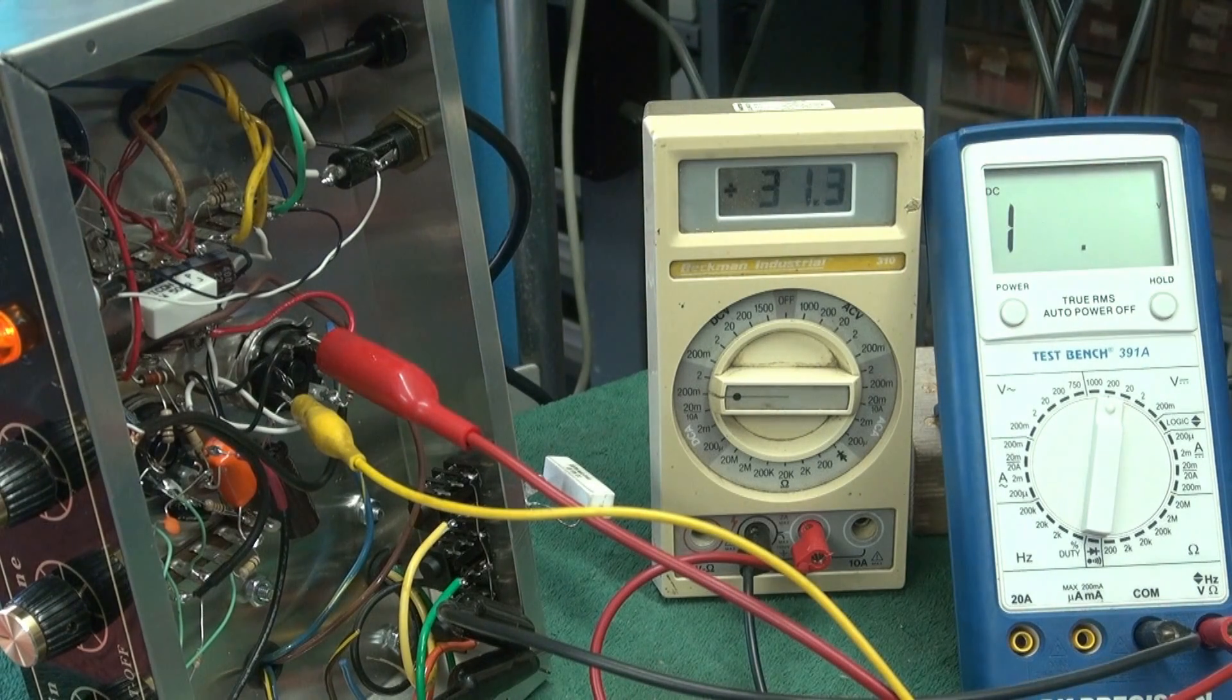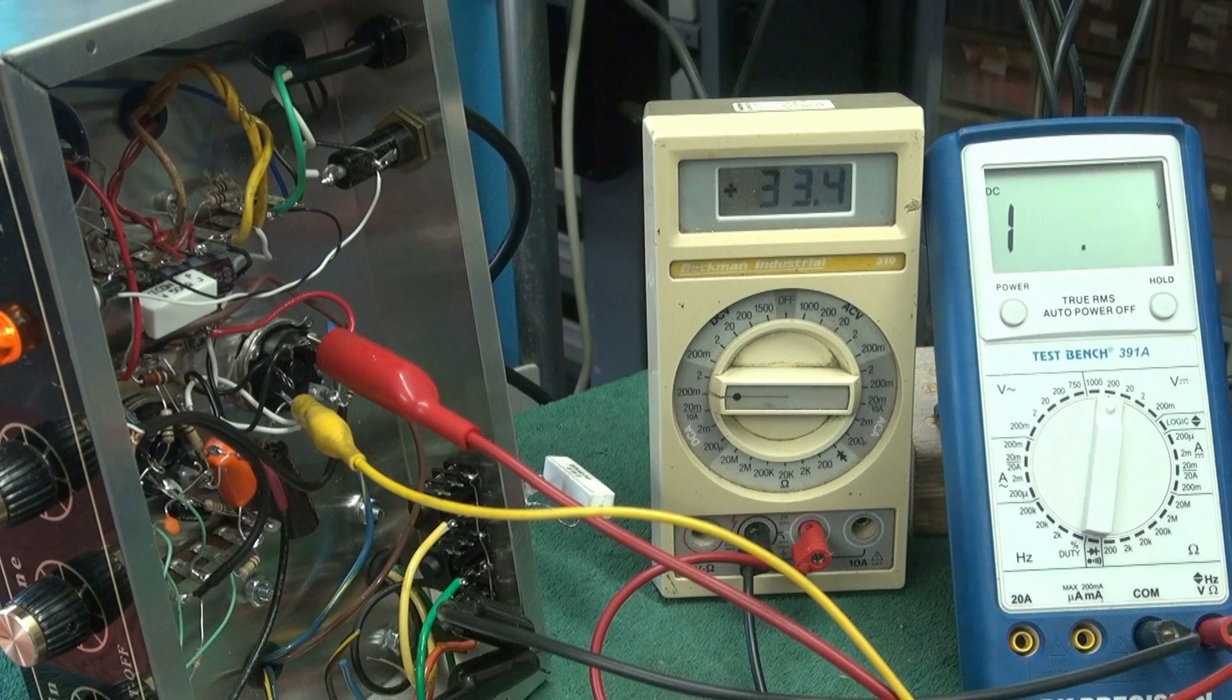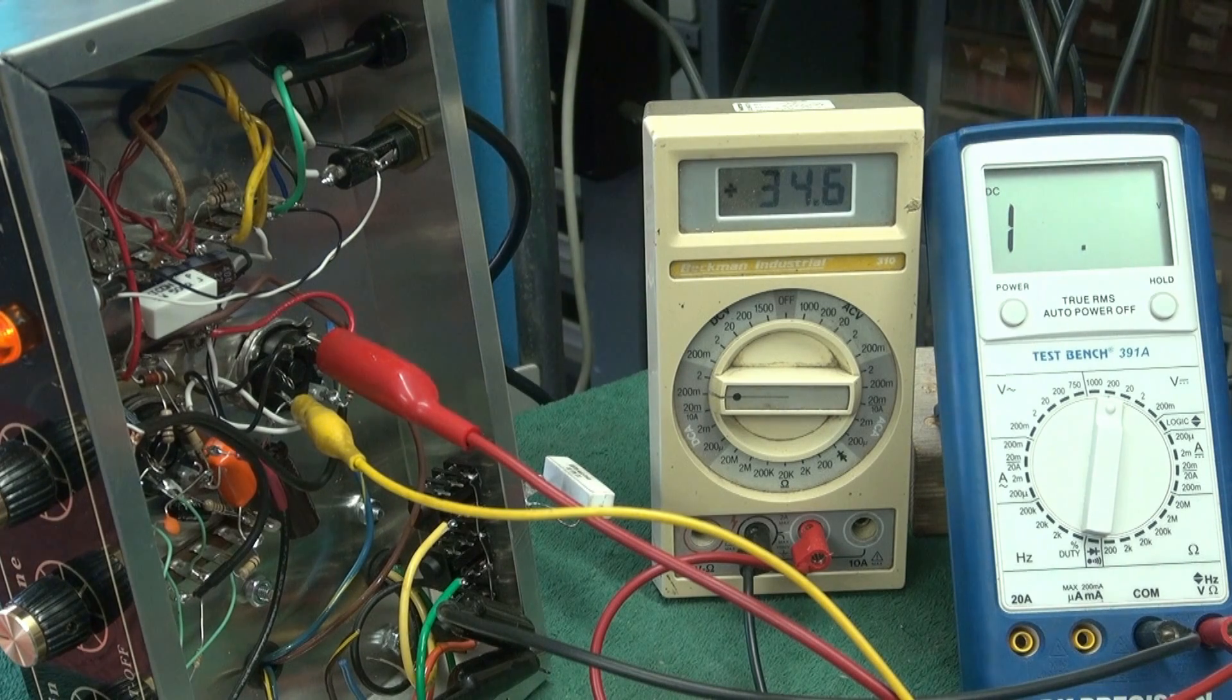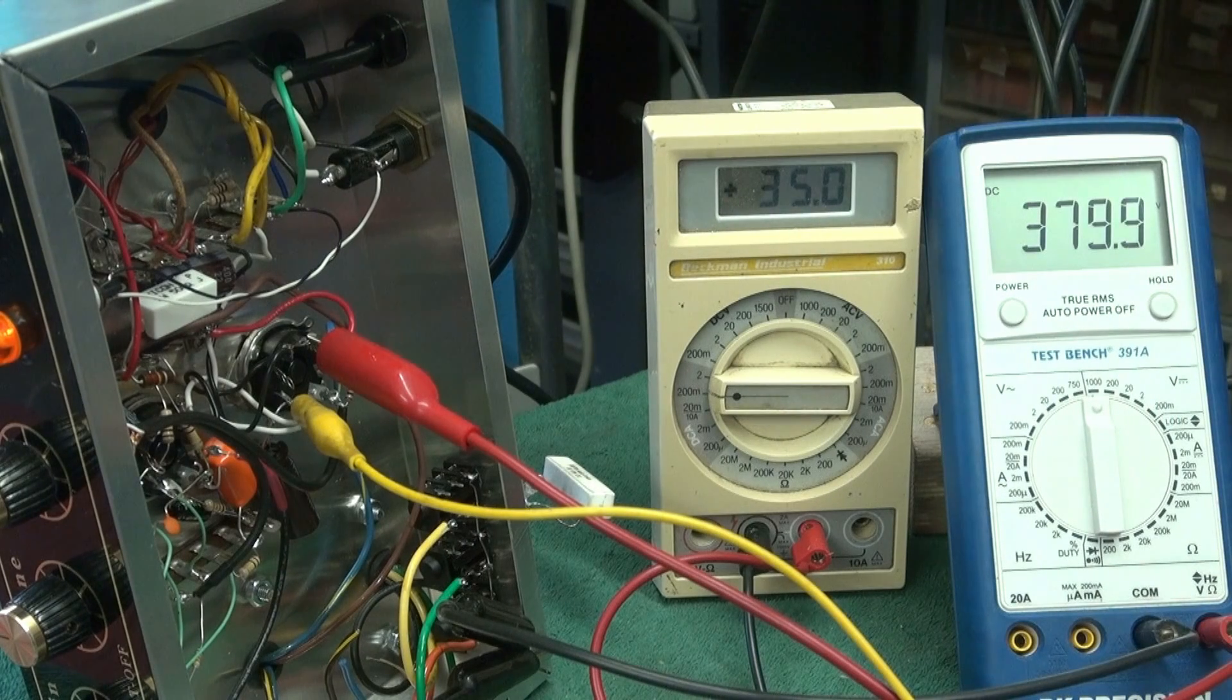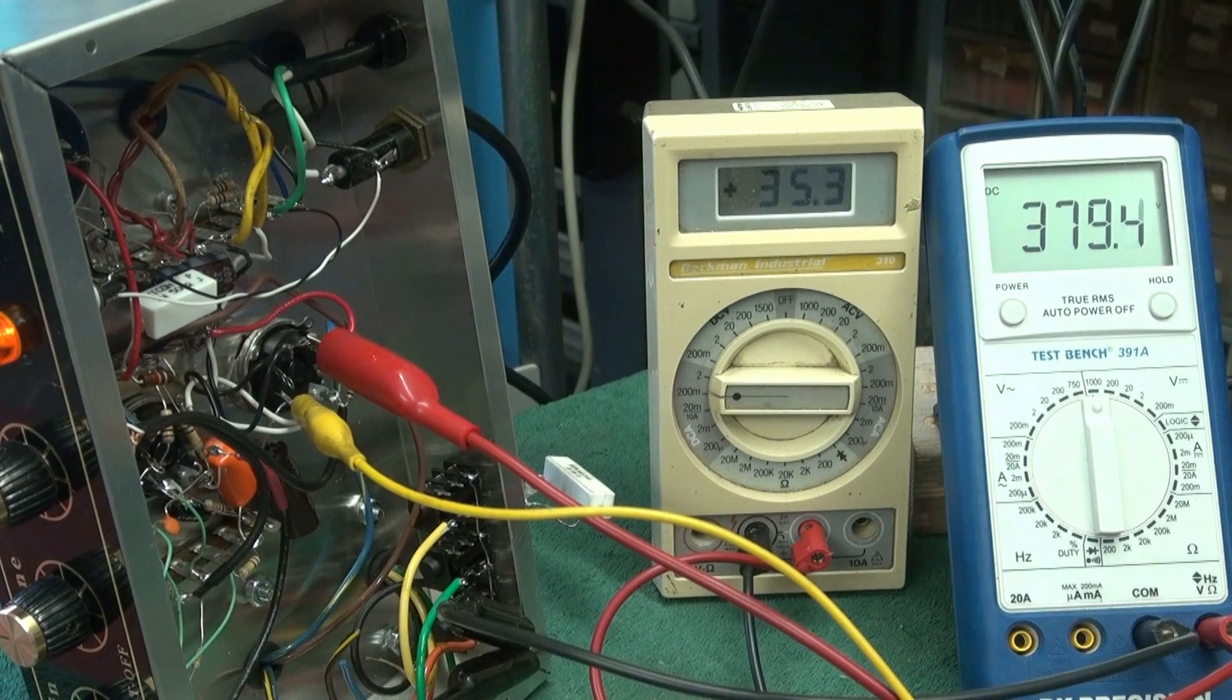All right, so here she comes. I'd like to say my bogey is 40 mils. You can see we're at 34 mils. High voltage is about 380 volts. 35 mils would work but it's a little light because I'm shooting for 40.